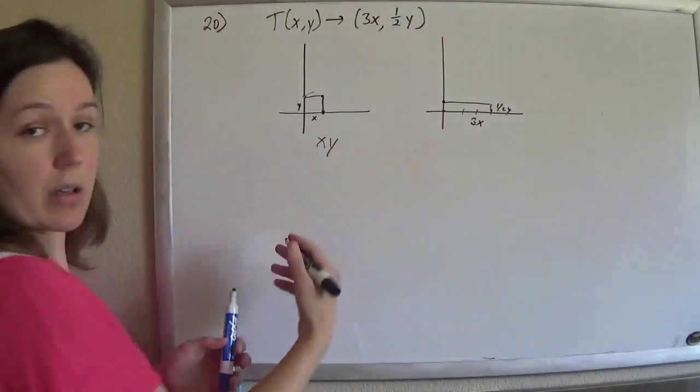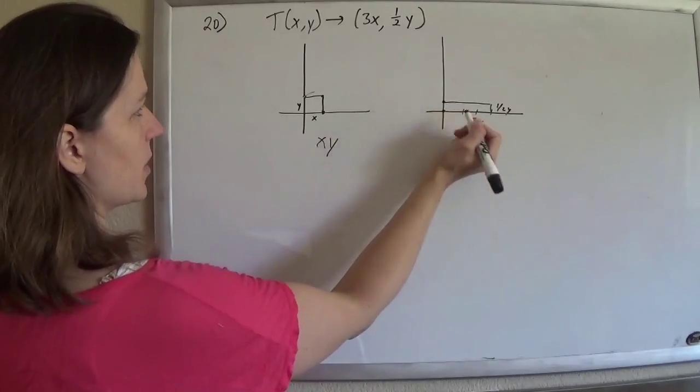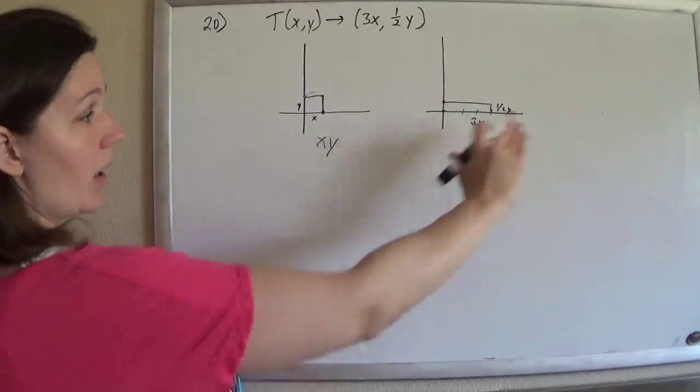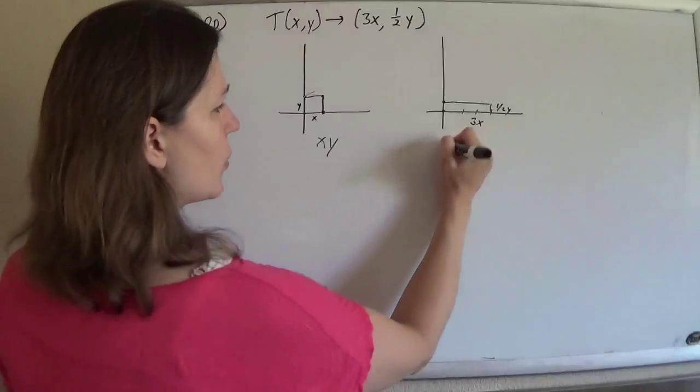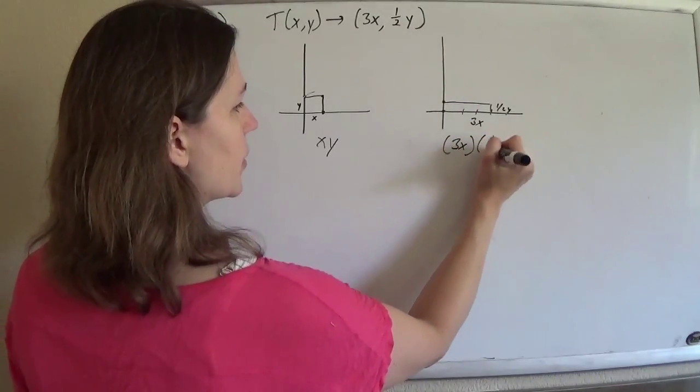And these points here kind of follow along 0 times 0, 0 times 1 half. So that's our new area, which is 3x times 1 half y.